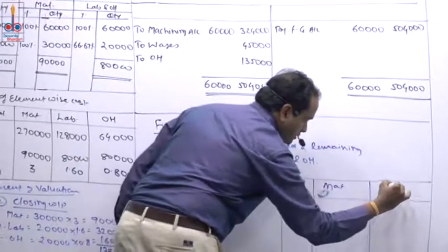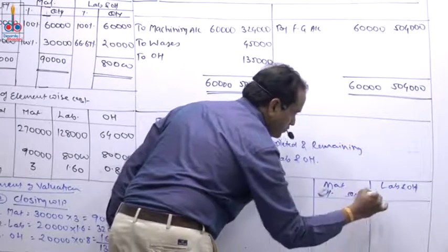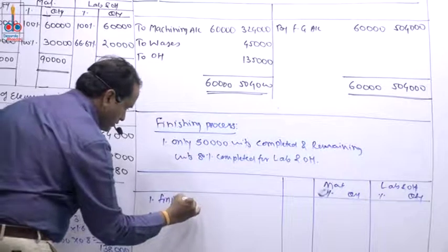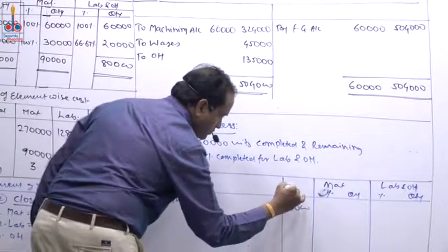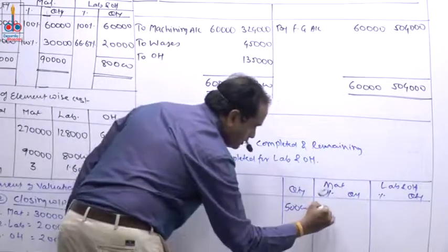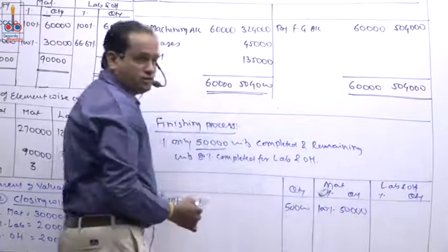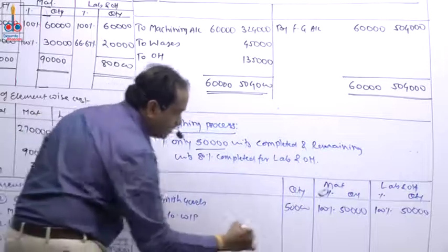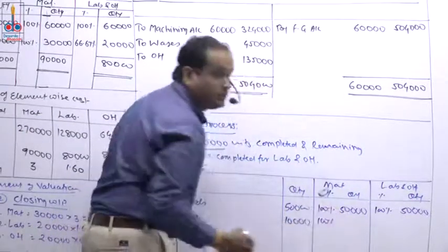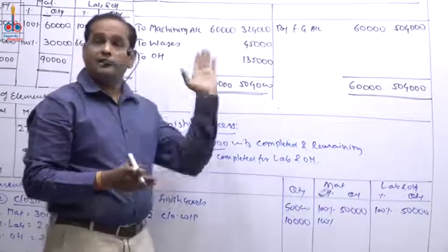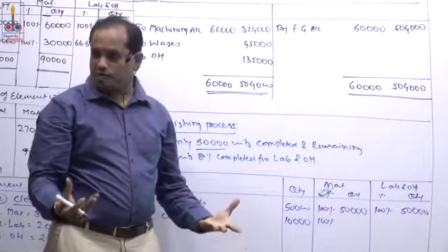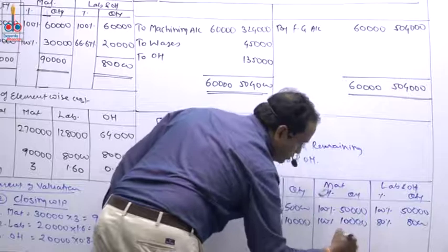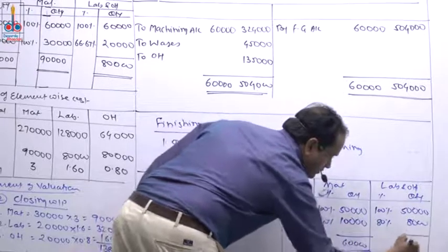It has material, labour and overhead columns with percentage and quantity. Finished goods: 50,000 units — material 100%, labour and overhead 100%, giving 50,000 each. Closing WIP: 10,000 units — material 100% (from previous process) giving 10,000; labour and overhead at 80% giving 8,000. So totals: material column 60,000 and labour/overhead column 58,000.